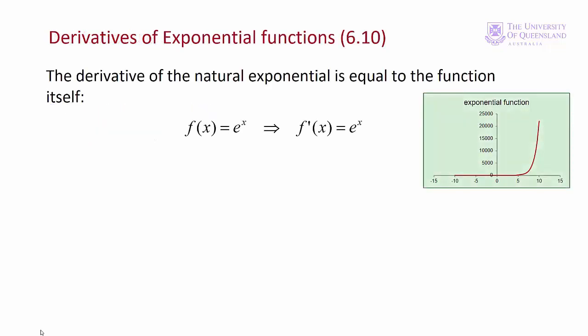There's nothing simpler than the derivative of a natural exponential function. If f(x) = e^x, then the first derivative f'(x) is also equal to e^x. That means the value of the slope is the same as the value of the function at any point.